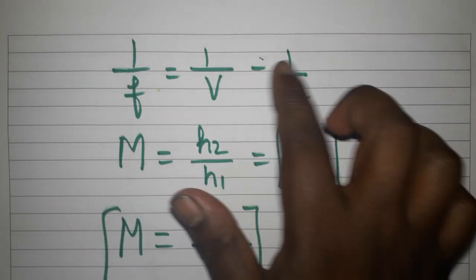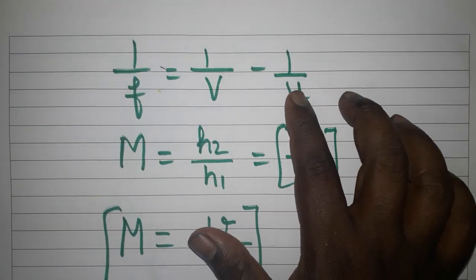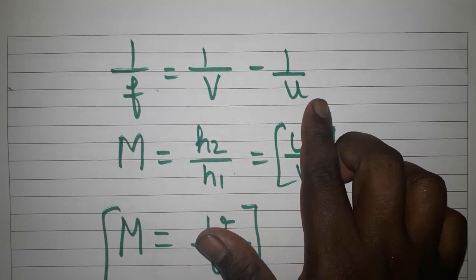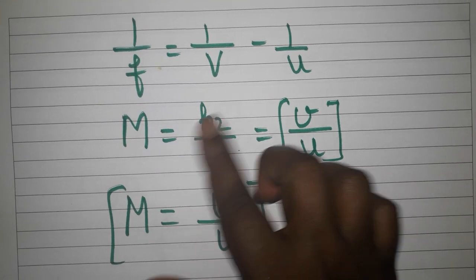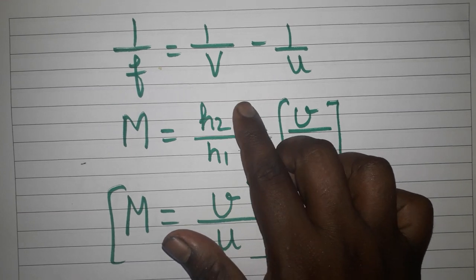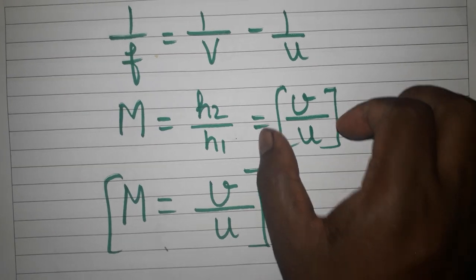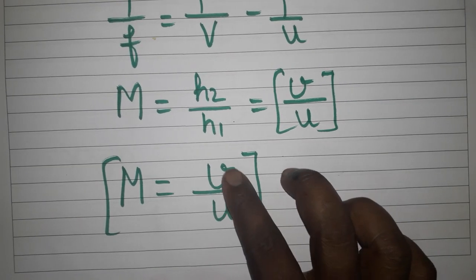The derivation starts with the lens formula: 1/f = 1/v - 1/u. Focal length, image distance, object distance. Magnification is equal to h2 divided by h1, image height by object height, and also image distance by object distance. So I am going to use v divided by u.